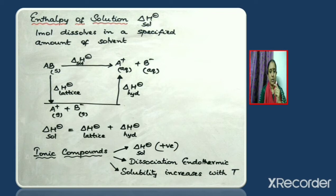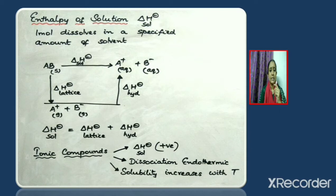To understand how we get this equation, consider an ionic compound represented as AB. The solid AB changes to A⁺ gas and B⁻ gas. From here it is clear that the ionic compound changes into its constituent gaseous ions. Lattice enthalpy is the energy required to completely separate one mole of a solid ionic compound into its constituent gaseous ions, so the enthalpy change accompanying AB(s) → A⁺(g) + B⁻(g) can be taken as the lattice enthalpy.